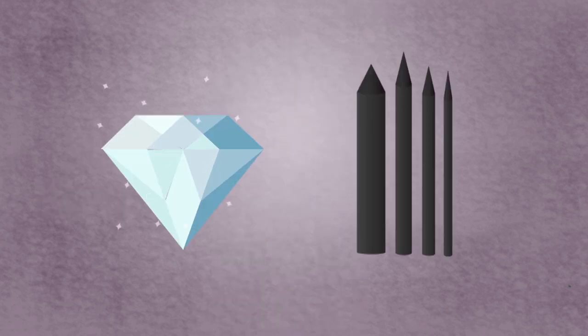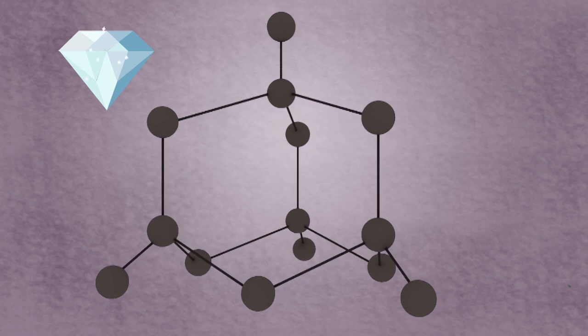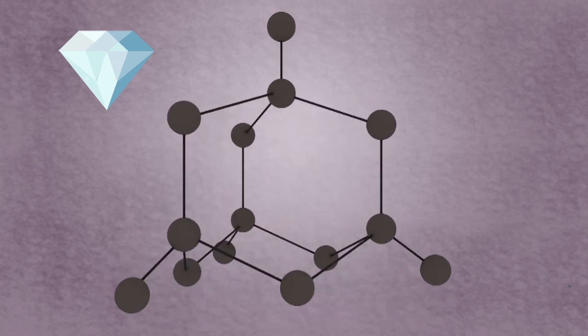These differences are due to the arrangement of carbon atoms within the structure. Each carbon atom in diamond is covalently bound to four other carbon atoms in a tetrahedral structure.